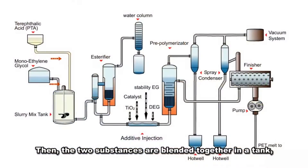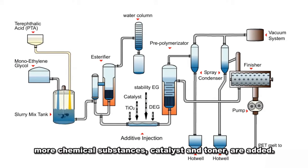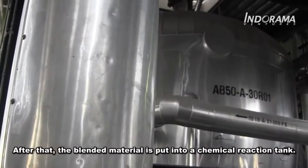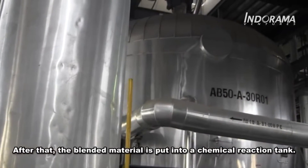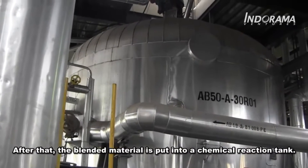Then the two substances are blended together in a tank called paste preparation. More chemical substances — catalysts and toner — are added. After that, the blended material is put into a chemical reaction tank.